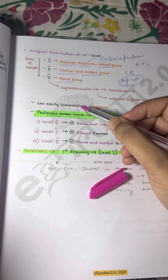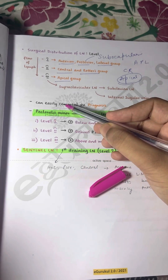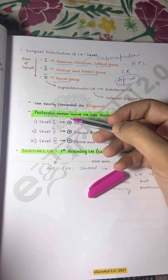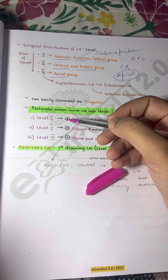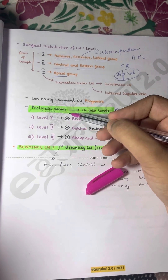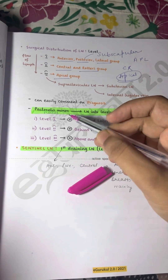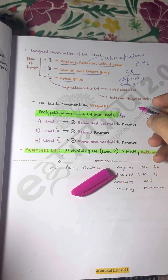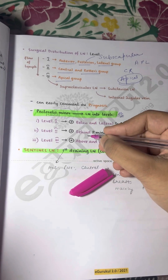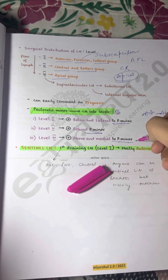These lymph node levels are divided on the basis of the pectoralis minor muscle. Level 1 is lateral to pectoralis minor. Level 2 is behind (deep to) pectoralis minor. Level 3 is medial to pectoralis minor.